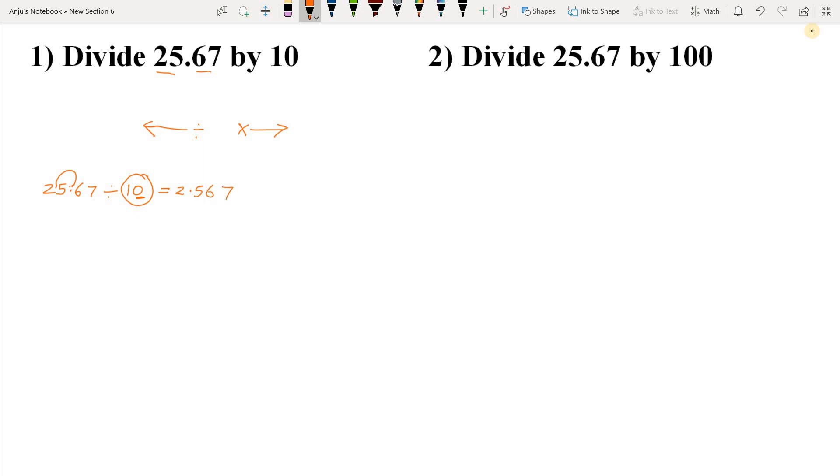Now let us divide the same number 25.67 by 100. Here we have two zeros in 100, so this means the decimal point will move two digits from right towards left. Here one digit, two digits, so the decimal point will come after the 2. So the answer is 0.2567. Here we have nothing in integral part, so we can write zero.